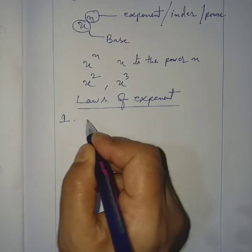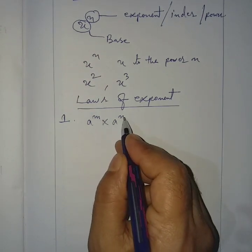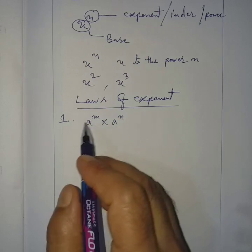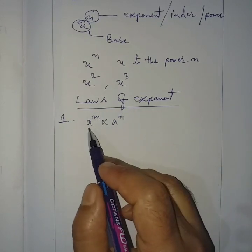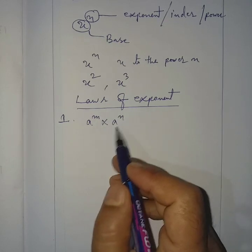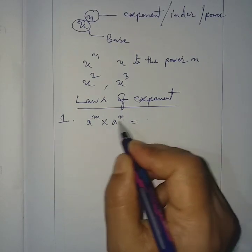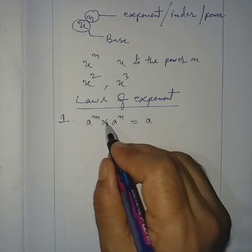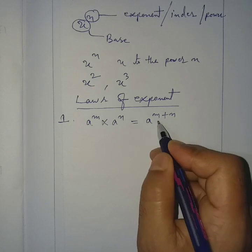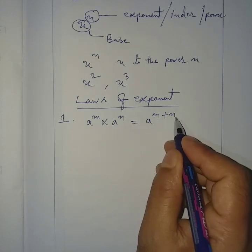Law number 1: a to the power m multiplied by a to the power n. Here the bases are the same. To apply laws of exponents, we must check that the bases are the same. If the bases are the same, we solve it by adding the powers. So a^m × a^n = a^(m+n).